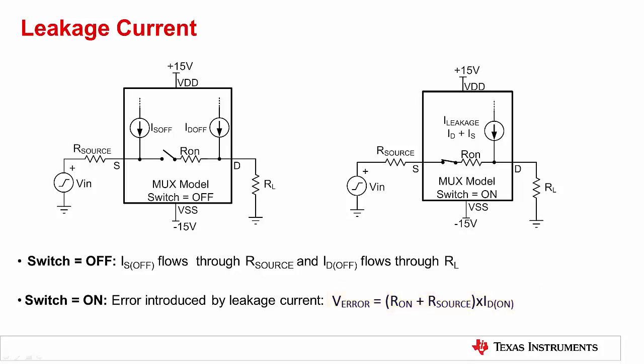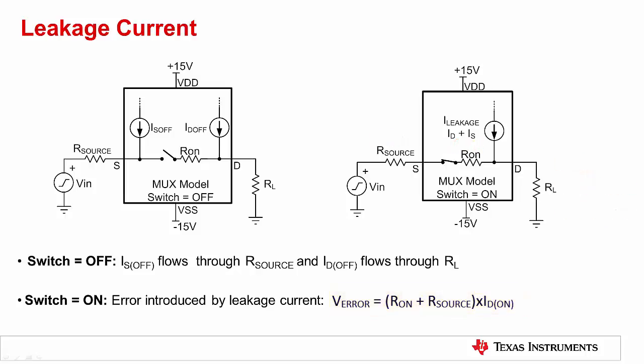Analog input modules and control systems often switch high input impedance sensors, such as pH, optical, humidity, accelerometer, and chemical sensors. All of these sensors exhibit high input impedance, which can vary from a few hundred kilo-ohms to a few giga-ohms. For such high input impedance sources, we can ignore the effect of the MUX's on resistance on total error introduced by leakage current. Also, V out of the MUX is usually connected to the non-inverting terminal of an operational amplifier, which exhibits high impedance. So for ease of understanding, let's ignore the effect of load resistance RL. With these assumptions, we can approximate offset error introduced due to leakage current when the switch is on as V error equals R source times ID on.